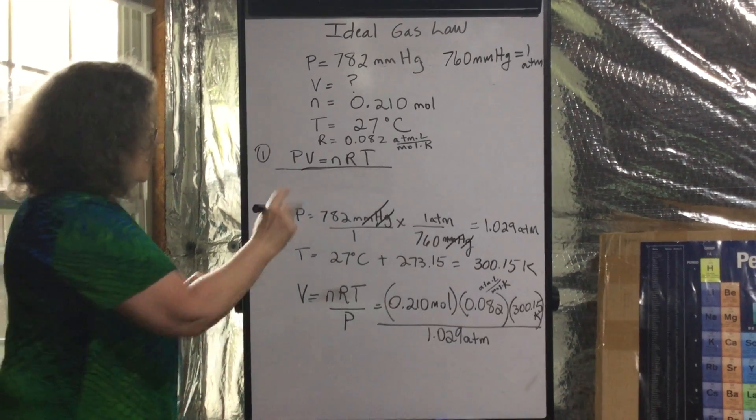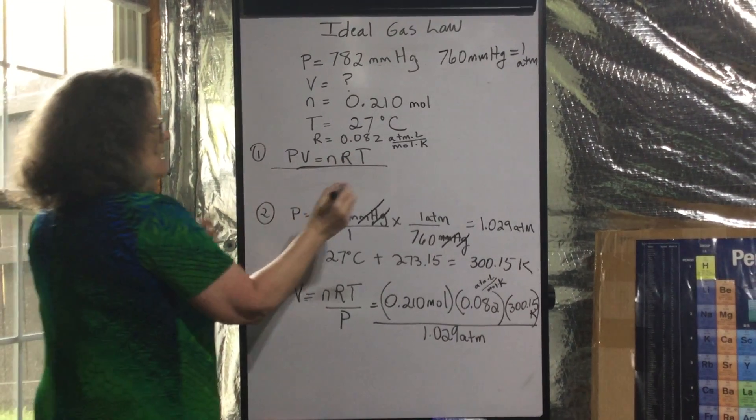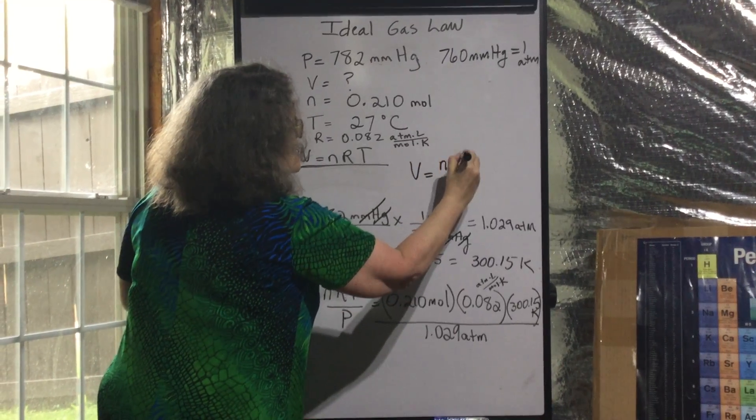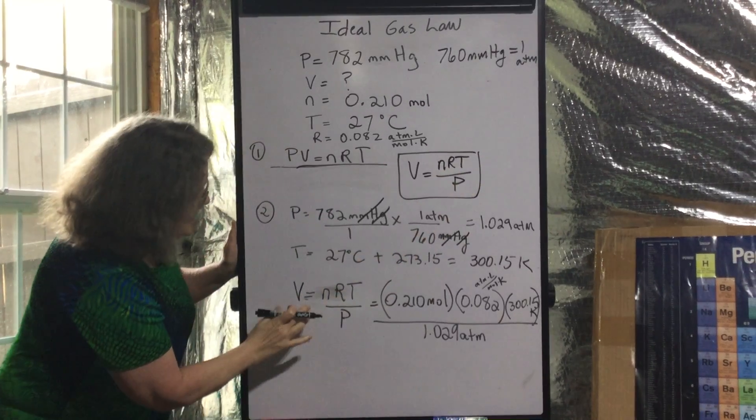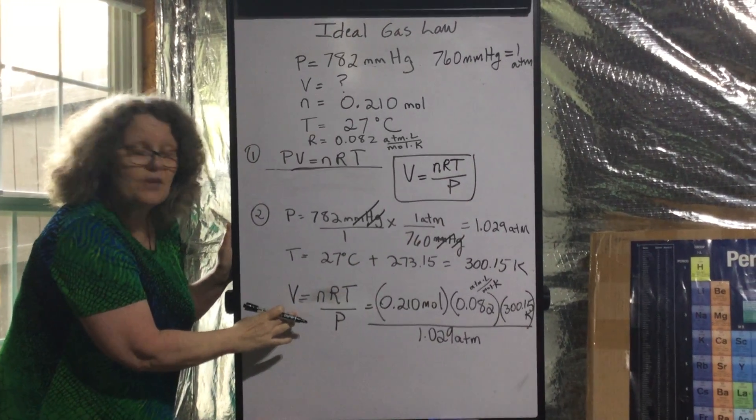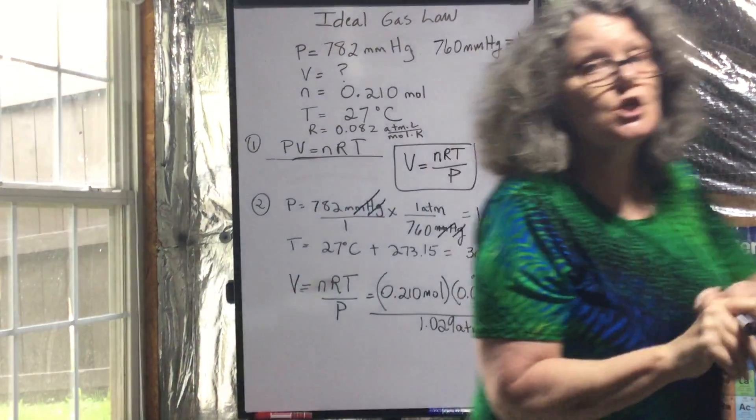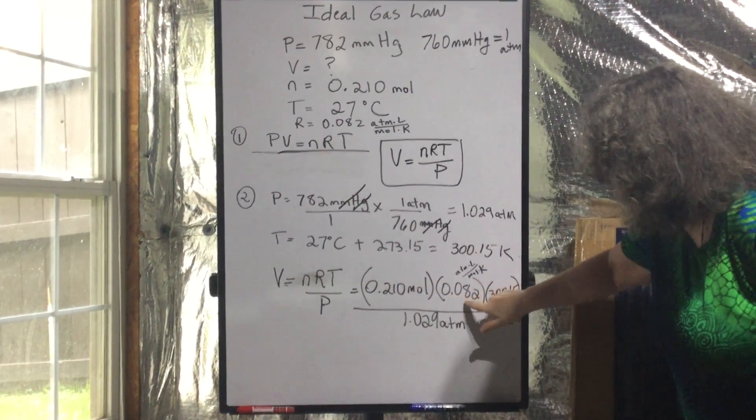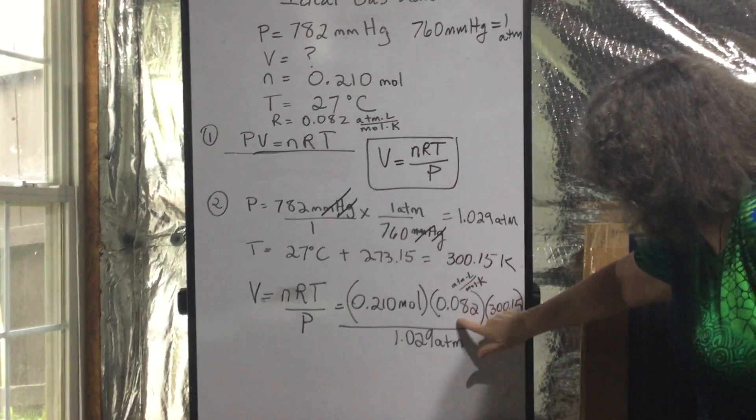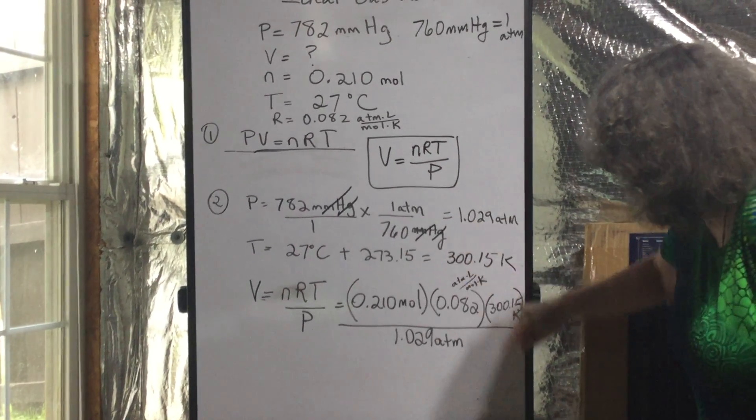PV equals nRT, so volume is nRT over P. So we set the equation up to solve, and now I'm going to substitute n, 0.210 moles. Here's my R, the gas constant, 0.082 atmosphere liters mole Kelvin.